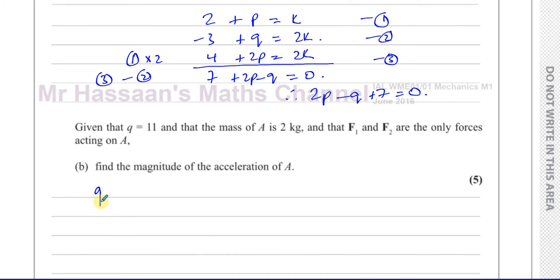So if Q is equal to 11, then we can see that 2P minus 11 plus 7 equals 0. So 2P minus 4 equals 0, 2P equals 4, P equals 2. So we have Q equals 11 and P equals 2.